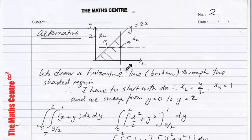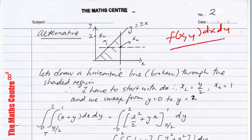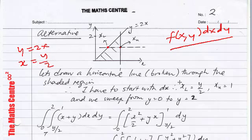Now let's say you want to integrate with respect to x first — that means your integral will be F of x, y dx dy. To do this, draw a horizontal line that will cut through your triangular region. See where it cuts, and determine the x limits. The lower limit of x comes from y equals 2x, so x equals y over 2, and the upper limit is x equals 1.